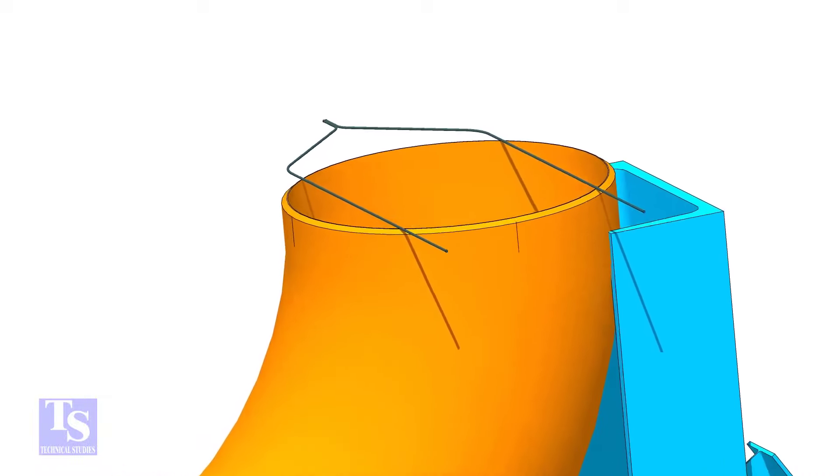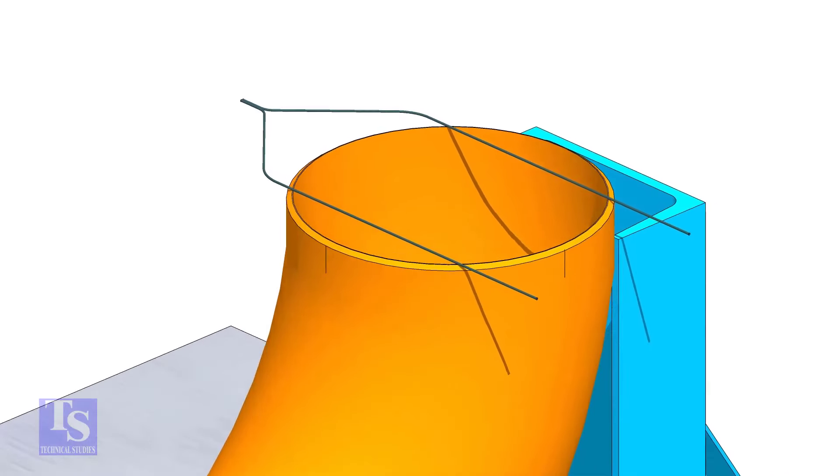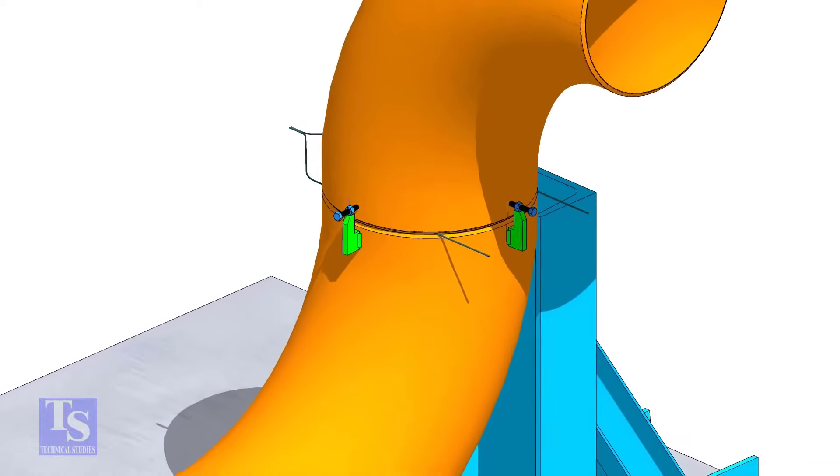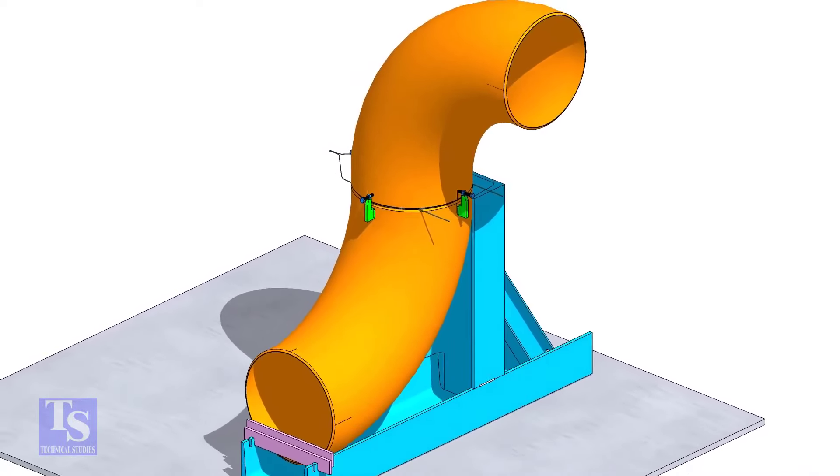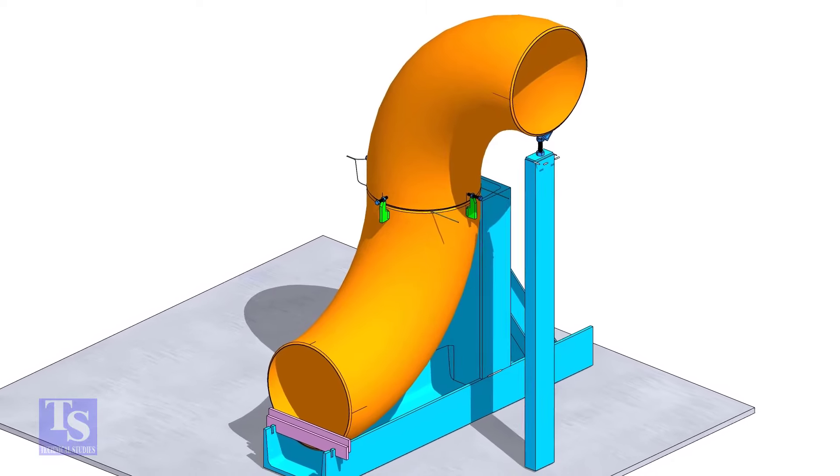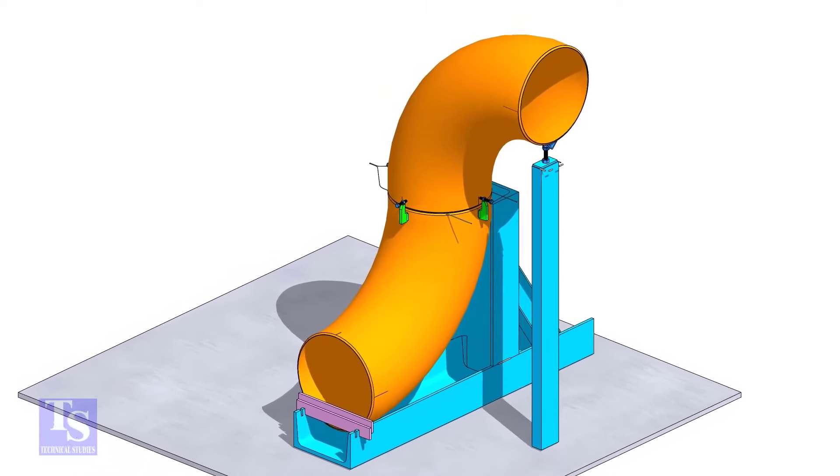Put the gap rod on the top face and tack weld four jack bolts as shown. Put the other elbow and match the center lines in which direction you want to rotate the other elbow. Tack weld an adjustable support below this elbow and adjust the height.